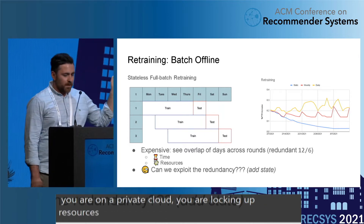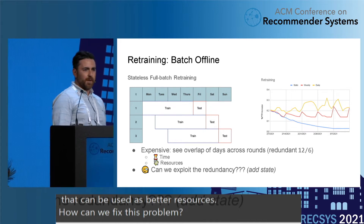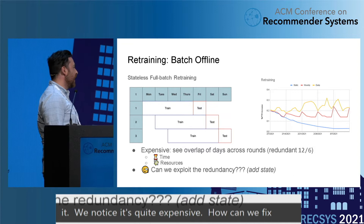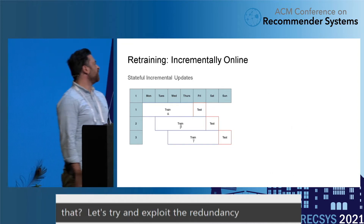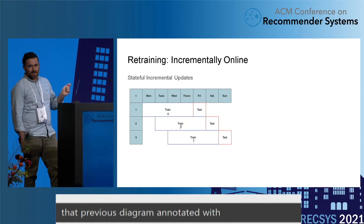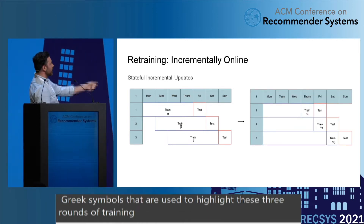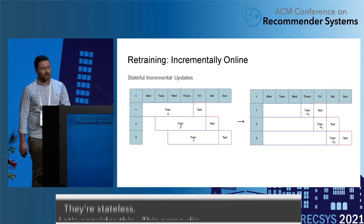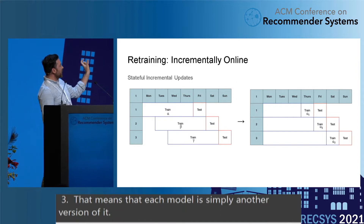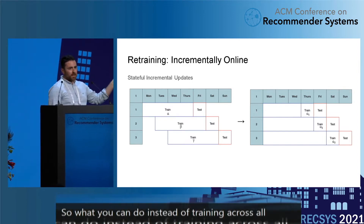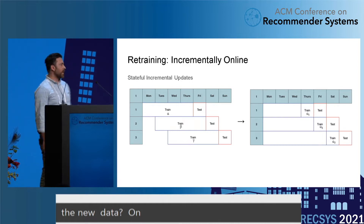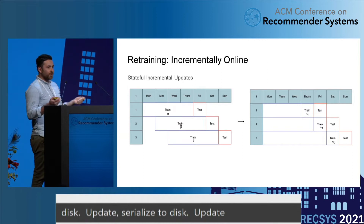So how can we fix this problem? We experienced drift, introduced stateless full-battery training to fix it, and noticed it's quite expensive. Let's try to exploit the redundancy in the data and add state. The previous diagram annotated with Greek symbols alpha, beta, gamma highlights that the three rounds of training are independent, stateless models. Now consider: instead of training across all four days each round, why not just train on the new data, serialize the model to disk, then on round two deserialize the model, update, and serialize again. That's an easy way to train incrementally — but it comes with two problems.